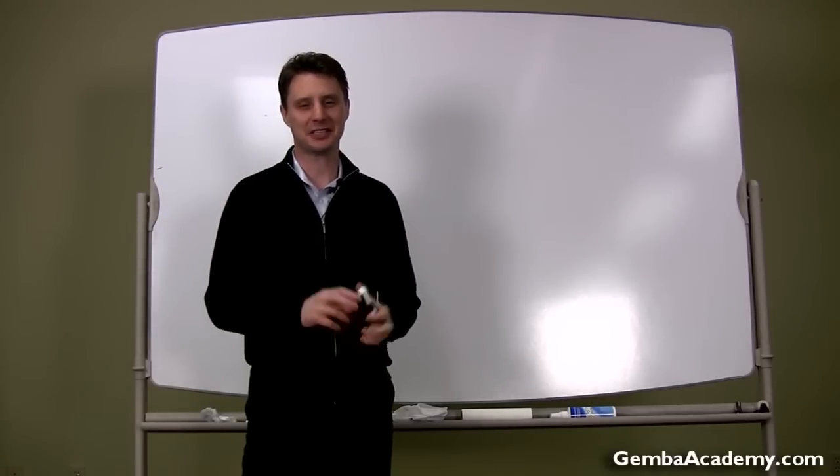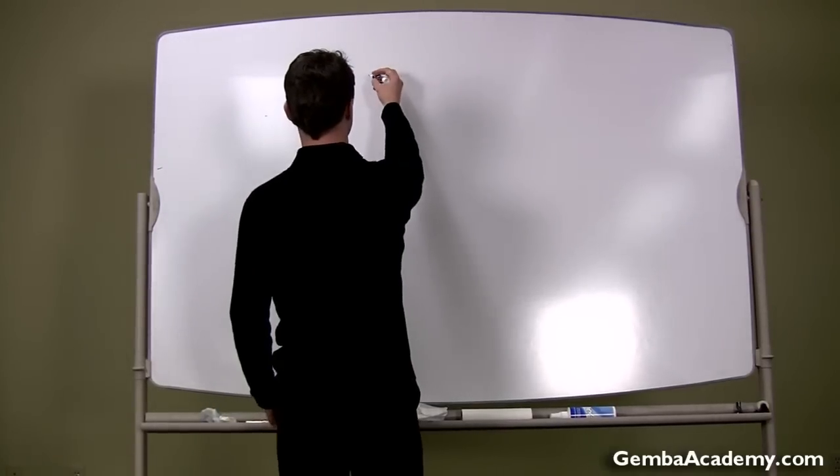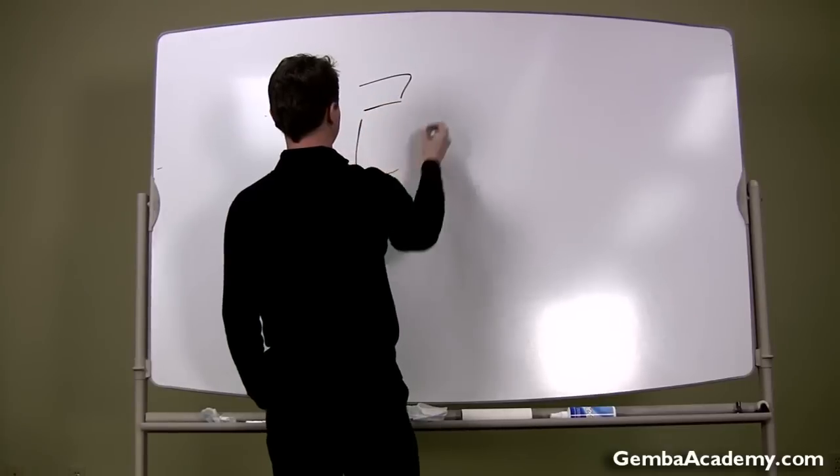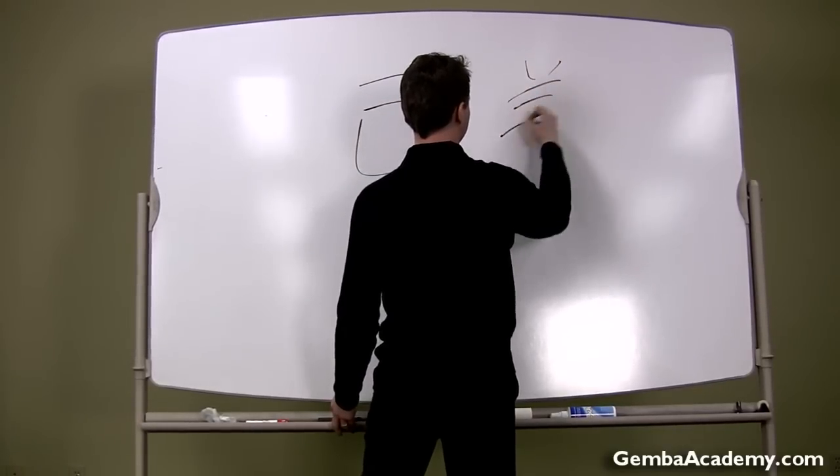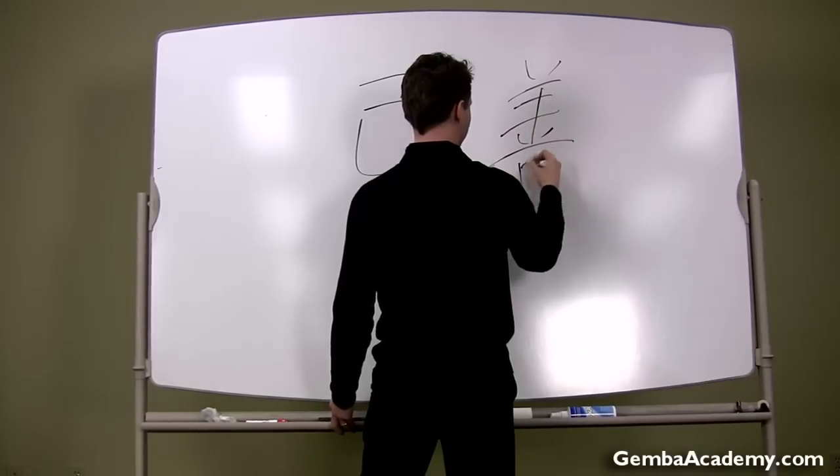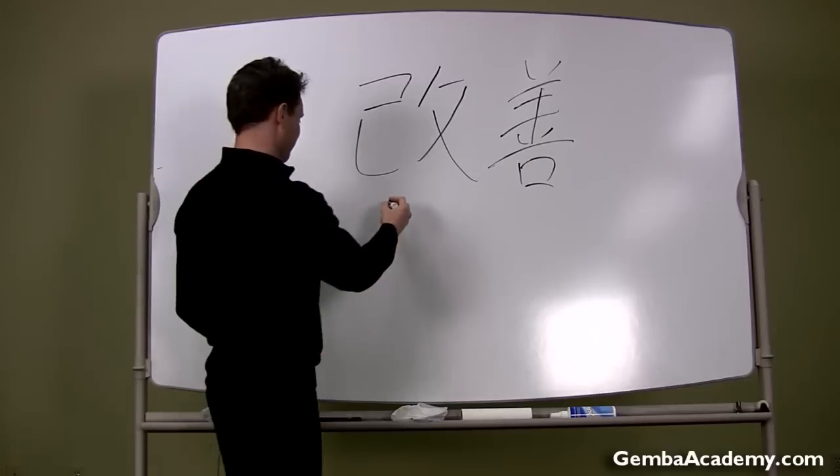That's the basis of lean. And it's made up of two characters. So let's see here. Okay, so this one is Kai. That's Kai. That's Kai.